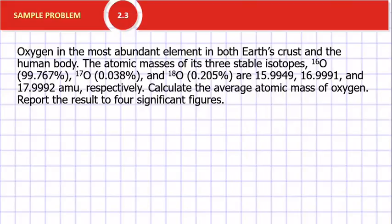Oxygen is the most abundant element in both the Earth's crust and in the human body. The atomic masses of its three stable isotopes, oxygen-16, oxygen-17, and oxygen-18, are given. Calculate the average atomic mass of oxygen. And it says report the result to four significant figures.